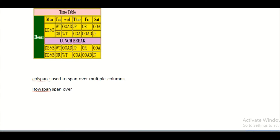The other attribute is rowspan, which is used to span over multiple rows. For example, 'Hours' here is spanning across multiple rows. Both attributes can be applied along with the td tag and the th tag.